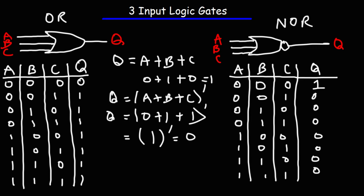Let's summarize everything we've learned. For the three input AND gate, the output is on when all inputs are on. For the three input NAND gate, the output is off only when all three inputs are on. For the three input OR gate, the output is off only when all three inputs are off. And for the three input NOR gate, the output is on when all three inputs are off. If you know those rules, you can easily fill out the rest of the truth table.